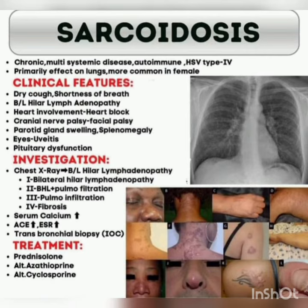On chest X-ray: Stage 2 shows bilateral hilar lymphadenopathy plus pulmonary infiltration; Stage 3 shows pulmonary infiltration alone; and Stage 4 shows fibrosis. Lab findings include raised serum calcium, raised serum ACE, and raised ESR.